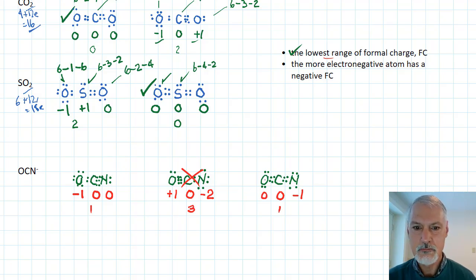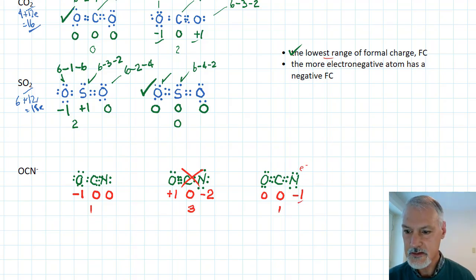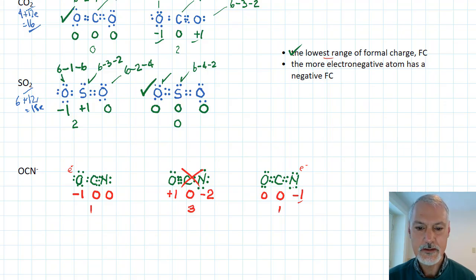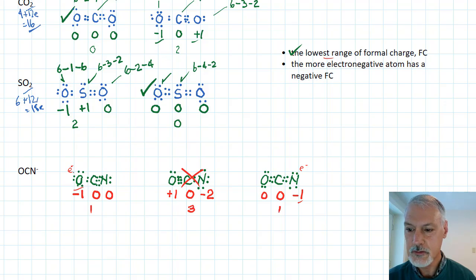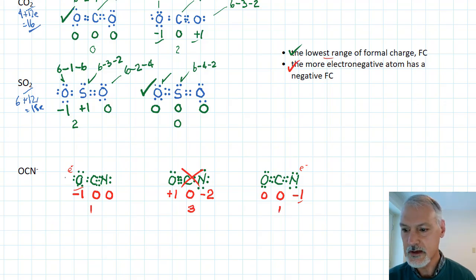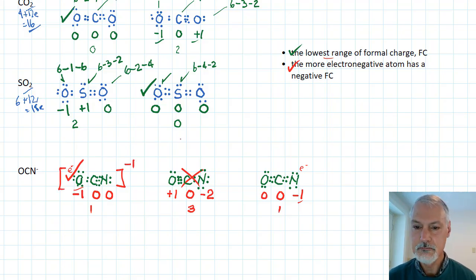The second rule comes into play as a tie-breaker: I must look at which structure places the negative charge on the more electronegative atom. In one remaining structure, nitrogen has the minus one charge; in the other, oxygen has the minus one charge. From our knowledge of the periodic table, oxygen is the more electronegative element, so it should possess the electron. Therefore, the structure with oxygen carrying the minus one formal charge is the appropriate Lewis dot diagram for OCN⁻. Formal charge is a tool we can use to select among several Lewis structures.